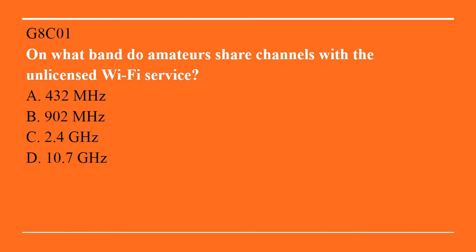G8C01: On what band do amateurs share channels with unlicensed Wi-Fi service? A. 432 MHz. B. 902 MHz. C. 2.4 GHz. Or D. 10.7 GHz. The correct answer is C, 2.4 GHz.